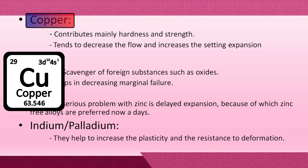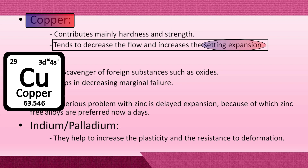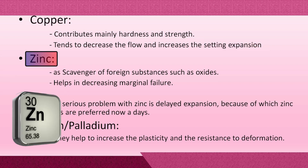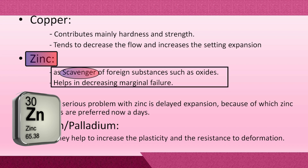Copper improves the strength of the resulting amalgam, but in excess it leads to expansion on setting. Zinc acts as a scavenger or deoxidizer — during manufacturing, zinc prevents the formation of oxides on copper, silver, and tin.